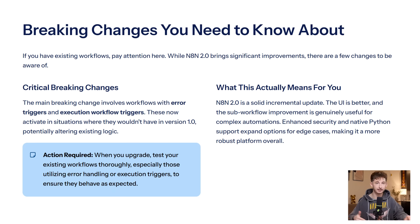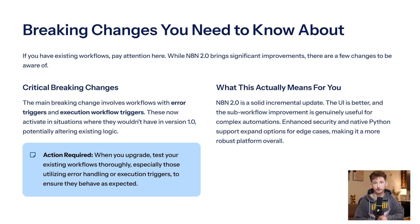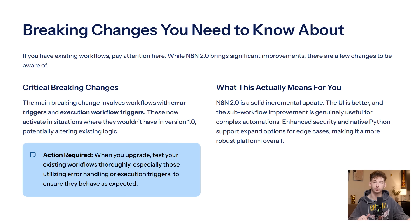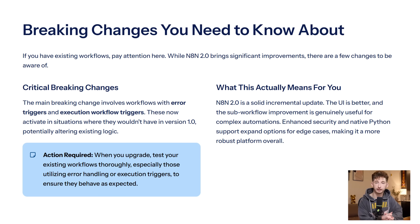Here are some breaking changes you need to know about. The main breaking change involves workflows with error triggers and execution workflow triggers — these now activate in situations where they wouldn't have in version one. When you upgrade, test your workflows, especially if you are using any error handling or execution triggers. Most workflows will be fine, but it's worth checking to make sure nothing behaves unexpectedly.